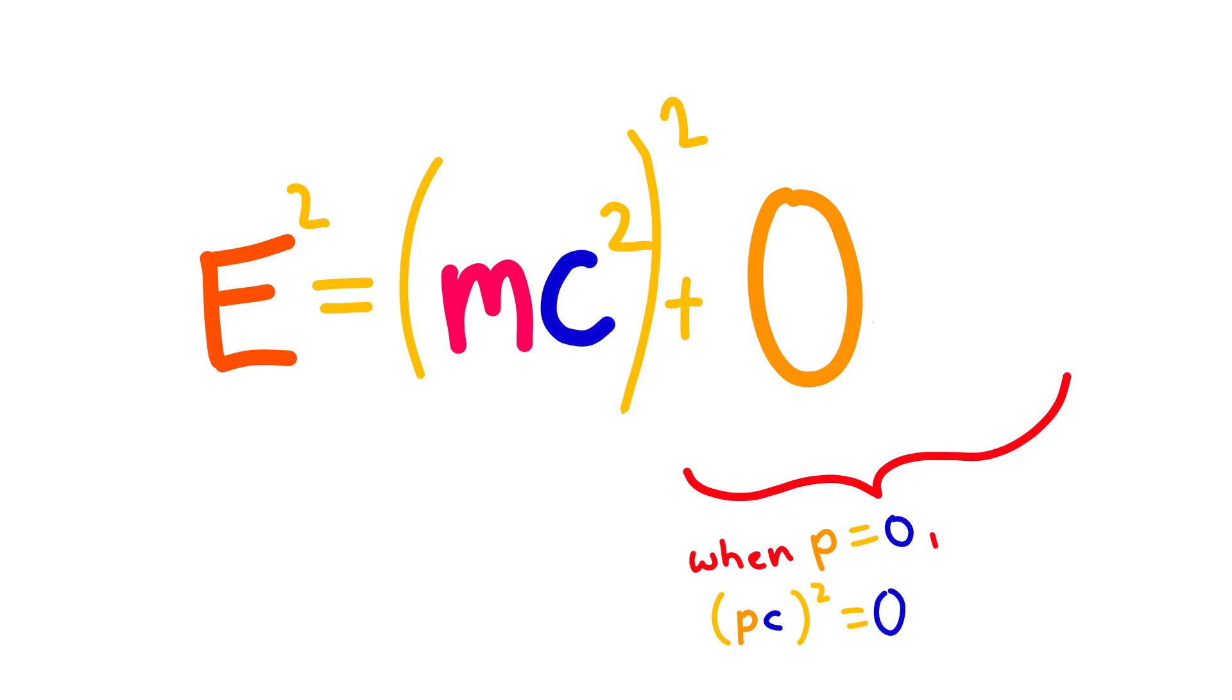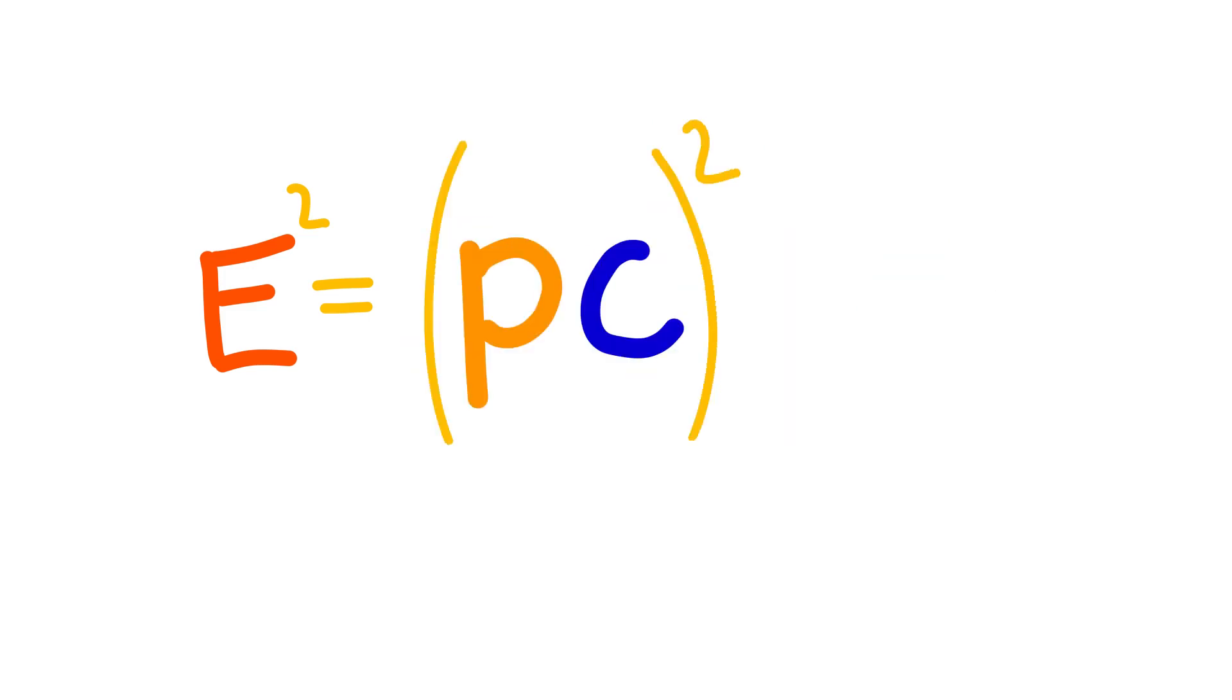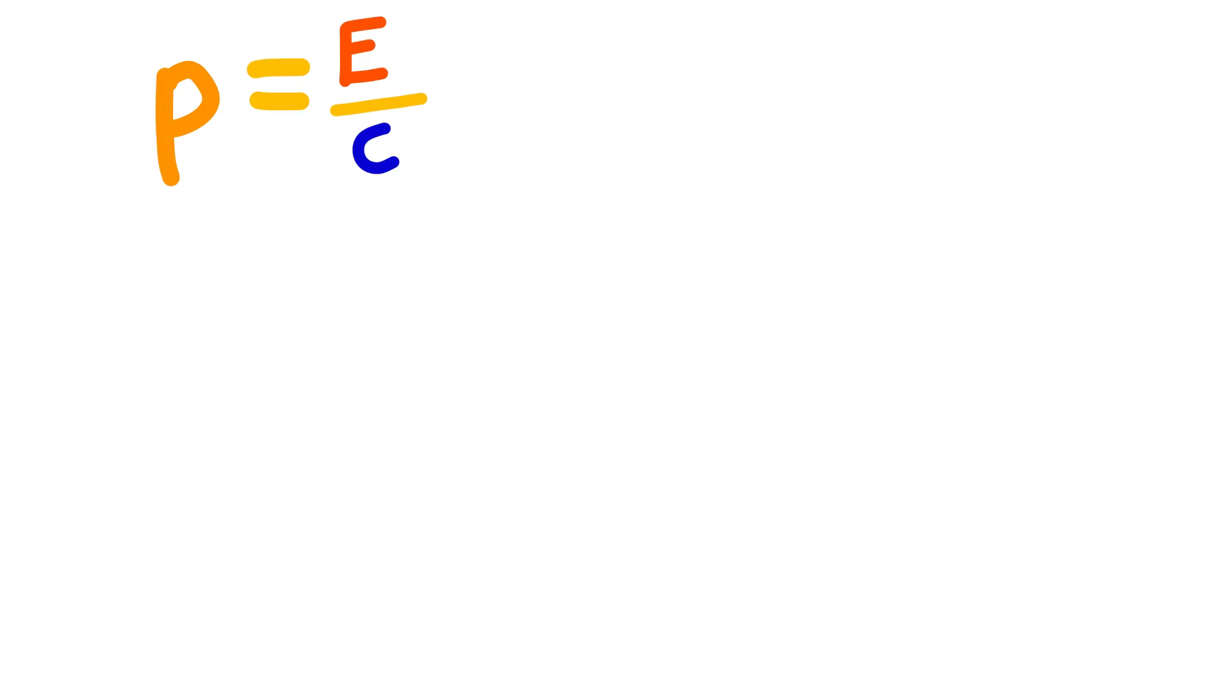So that bit can get cut out. But we need that bit now because we need to get the momentum. We can set the mass to zero and still have a viable equation for momentum. Therefore, we can have a massless object that can have momentum as long as it has energy.